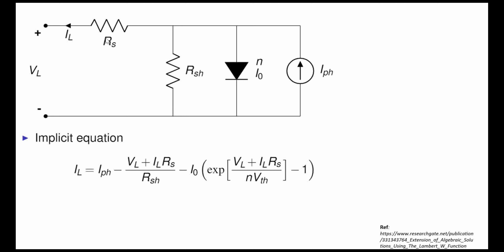This equation is implicit — we cannot separate all I parameters on one side and all V parameters on the other, because the exponential contains both V_L and I_L. To solve this transcendental equation and find Rs, Rsh, and ideality factor n, it is not straightforward. That is why suggested methods like the Cheung method and differential resistance method are used.